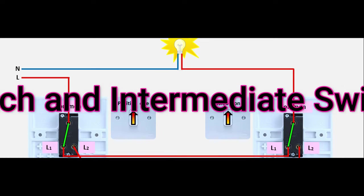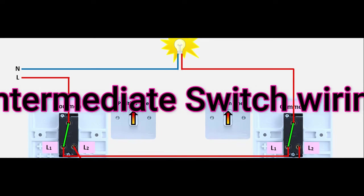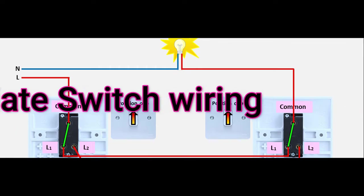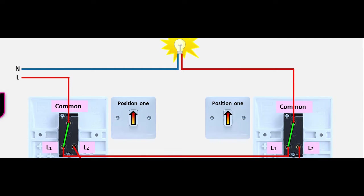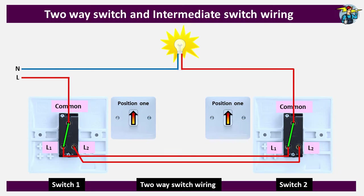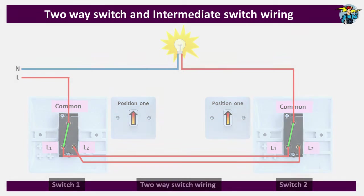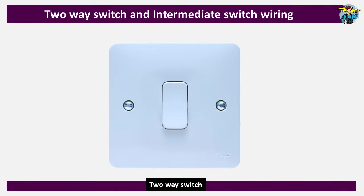Good day to everyone. Today let's see how two-way switches and intermediate switches work and also how to wire them correctly onto a circuit. This is a two-way switch, but you can't just identify it by seeing only the front view of the switch, since it has the same front view as a one-gang switch.